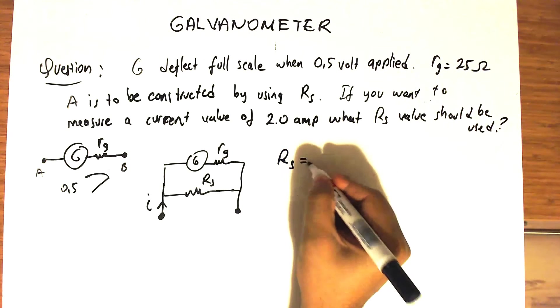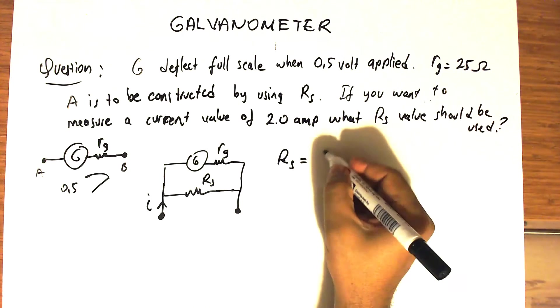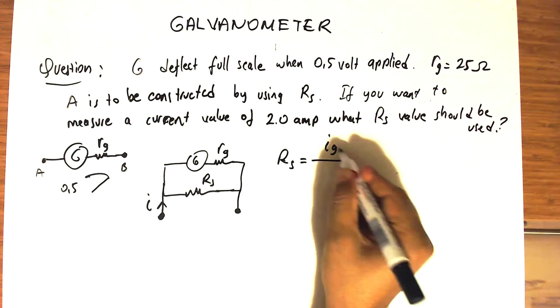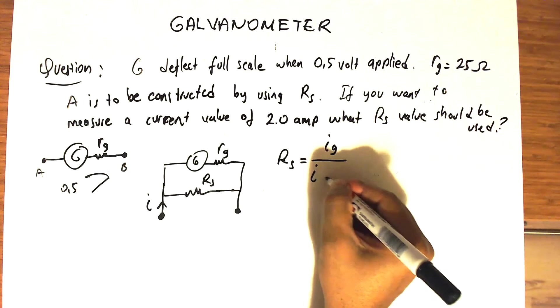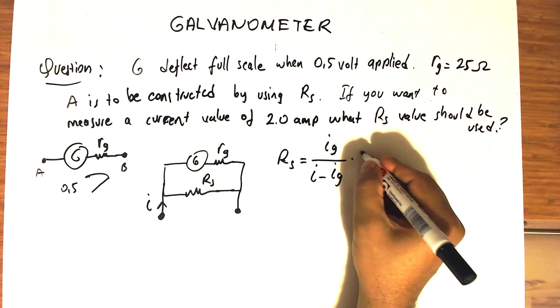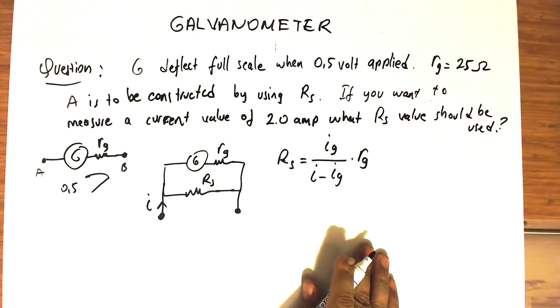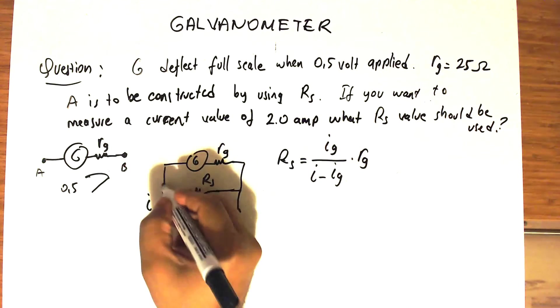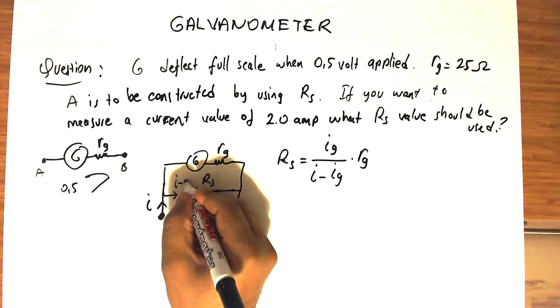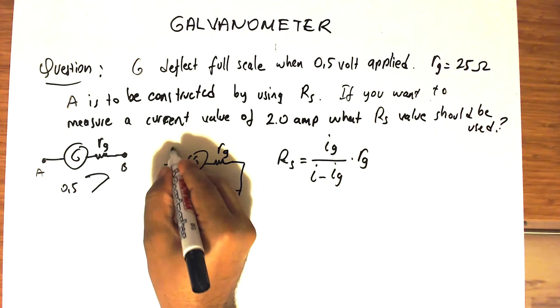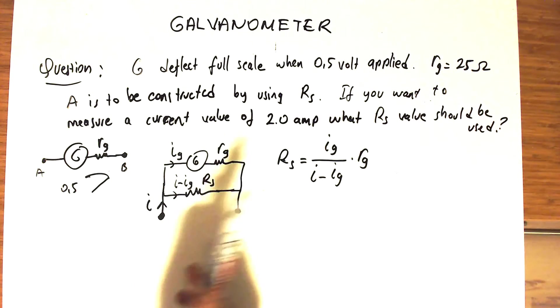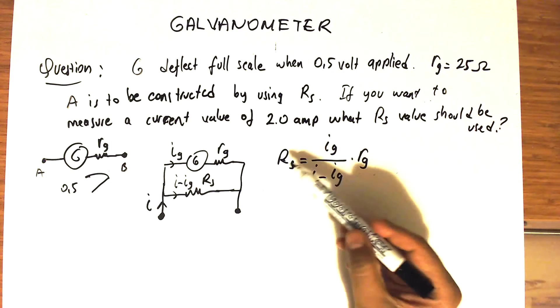That this Rs shunt resistance value is the current, the maximum deflection current for the galvanometer, divided by the current to be measured, i minus ig, multiplied by the internal resistance of the galvanometer. This is i, this is i minus ig, and this is ig.